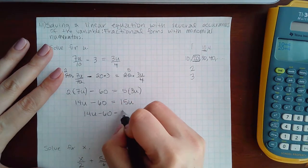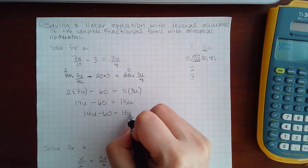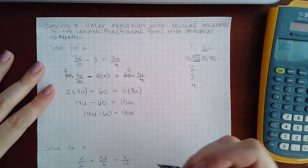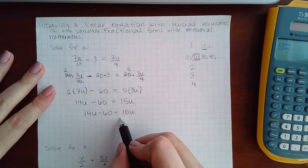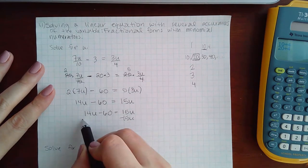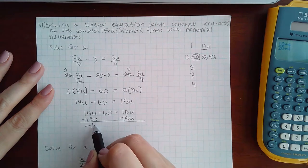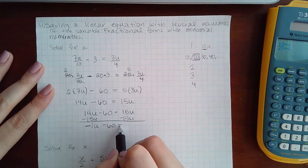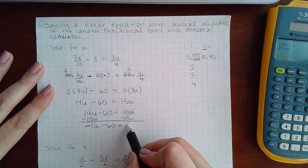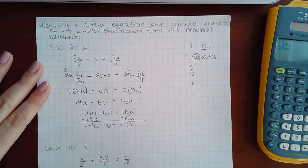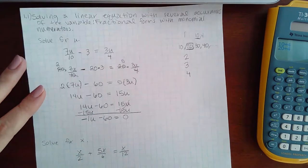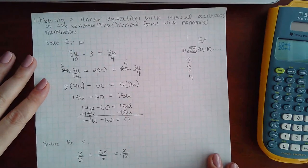This is a variable term, this is not, so there's nothing to combine left. And on the right hand side, it's just one term, so nothing to combine on the right. Now step 4 is to move all of our variable terms to one side. So I'm gonna minus 15u on both sides. And on the left hand side, I get negative 1u minus 60.